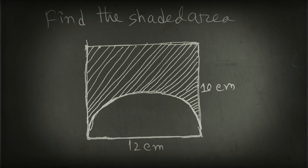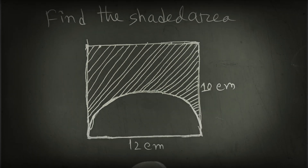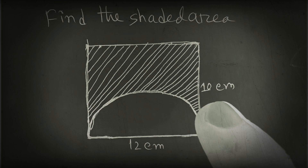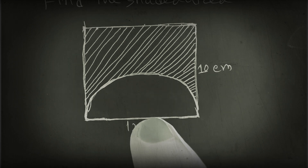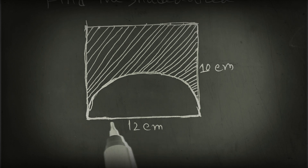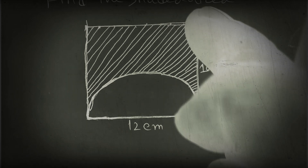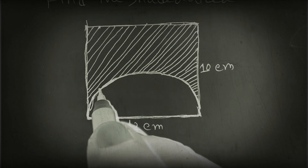We are finding the shaded area. Here is a figure with a small semicircle and a rectangle whose one side is 12 cm and another side is 10 cm. We have to find this shaded area. First of all, we have to find out the area of the semicircle. This line is 12 cm and this line is 10 cm — this line includes the semicircle.